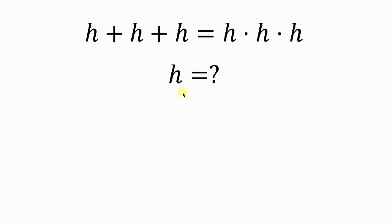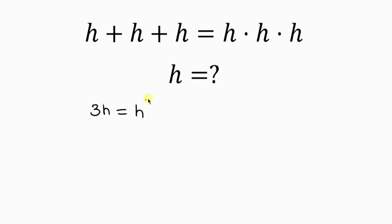Let's look for the value of H given that H plus H plus H is equal to H dot H dot H. Note that dot also means multiplication. So the expression on the left, H plus H plus H, is 3H, and this is equal to H dot H dot H, which is H to the 3.